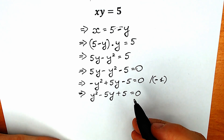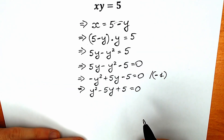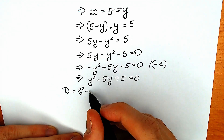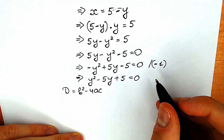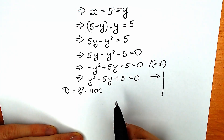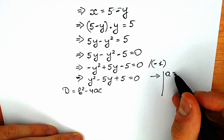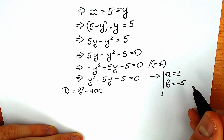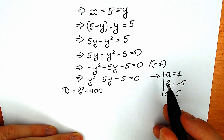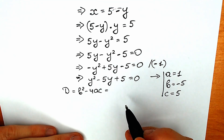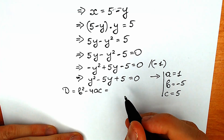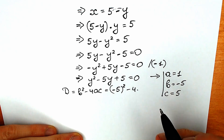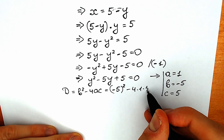I'm going to show you how to solve it with the well-known discriminant method. We have D equals b squared minus 4ac. Our coefficients are: a equals 1, b equals minus 5, and c equals 5. Plugging in: D equals (minus 5) squared minus 4 times 1 times 5.